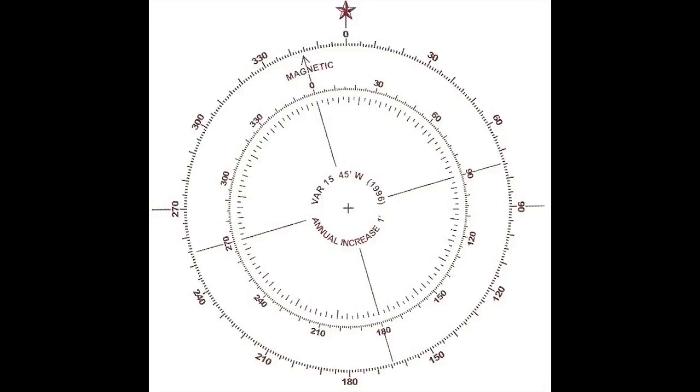Both diagrams shown here are more than 20 years old, so you should expect the declination to be several degrees different. For land navigation purposes, it's okay to round the declination to the nearest degree. Round up when the fractional part is half a degree or more, or when it's more than 30 minutes. We would round both of these diagrams to 16 degrees.